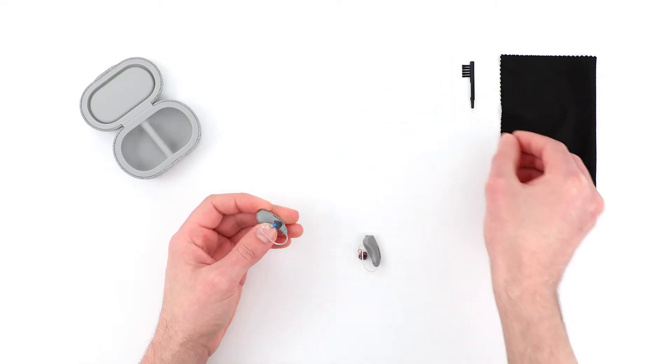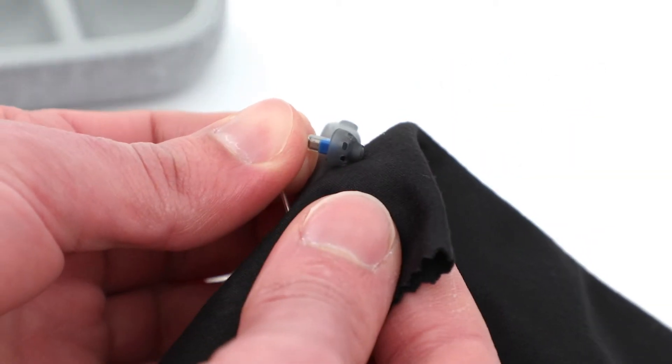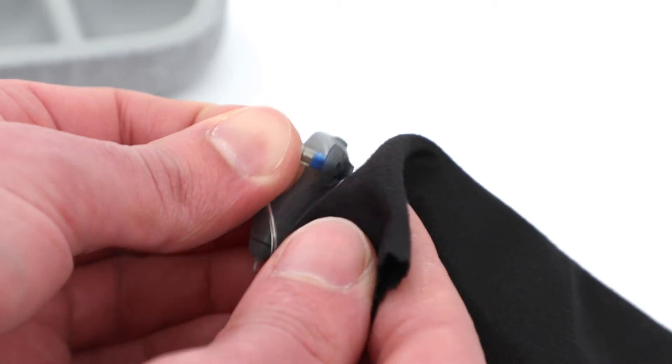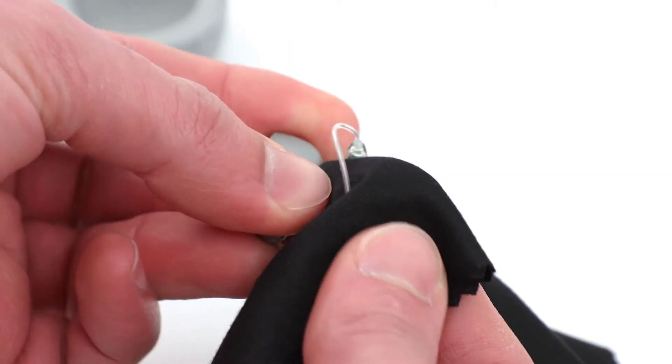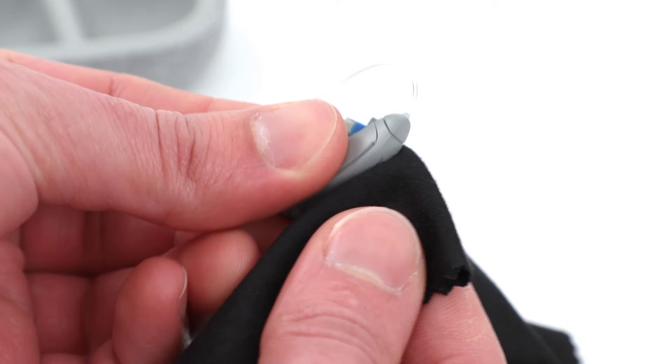Using a clean, lint-free cloth, remove any earwax and debris from the ear tips. We also recommend wiping the hearing aid cables and removing any moisture from the hearing aid body.